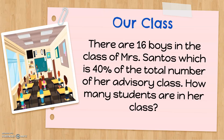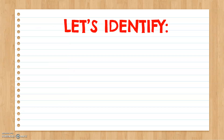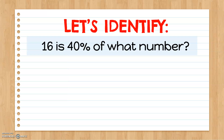If we analyze the problem, it is basically asking us: 16 is 40% of what number? To answer this, let's identify the percentage and the rate. The keyword for the percentage is 'is.' Before the word 'is,' we have 16 and we have 40%. Since 40% has a percent symbol, it means that this is our rate, therefore 16 is our percentage.